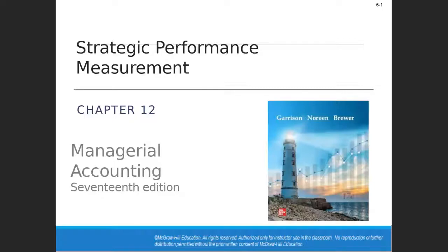Chapter 12 is all about measuring performance of the organization as a whole. In chapter 16, we talked about financial performance measures — market outcomes based on stock price, dividends, and things like that. Most of that chapter was financial performance measures.